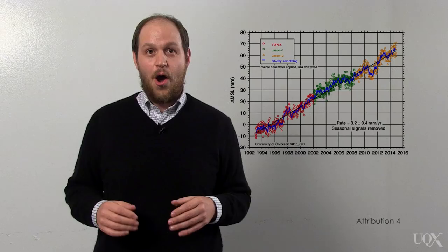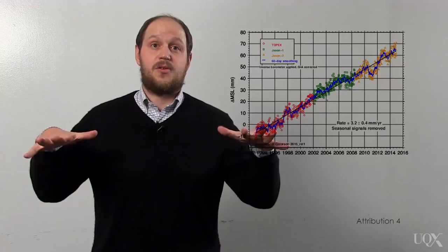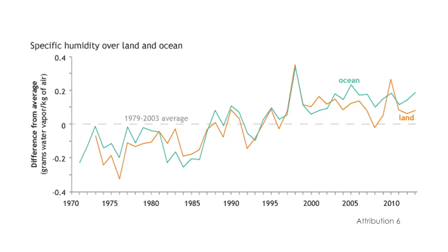Ocean water expands as it heats up, and land ice melts and runs off into the ocean. This causes sea levels to rise, which is happening rapidly. Glaciers around the world are shrinking.